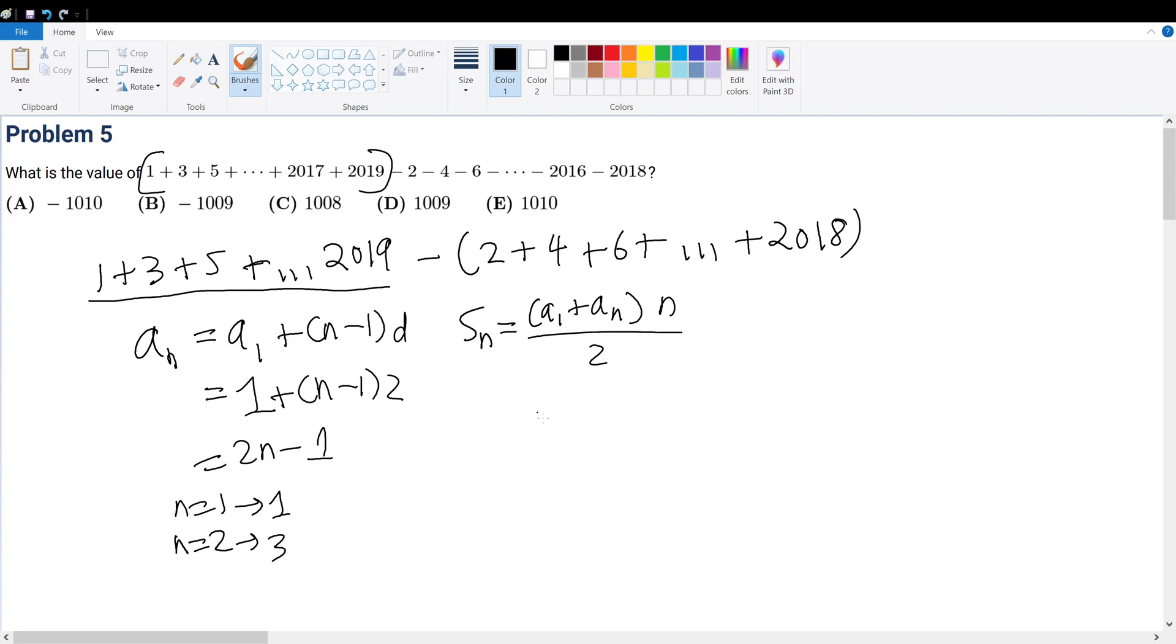What is a sub n? a sub n equals 2019. If that's the case, then 2n equals 2020, and therefore n equals 1010. So we have 1010 terms starting from 1. In other words, this summation must be equal to 1010 times 1 plus 2019 divided by 2.